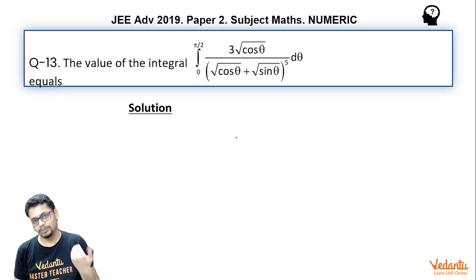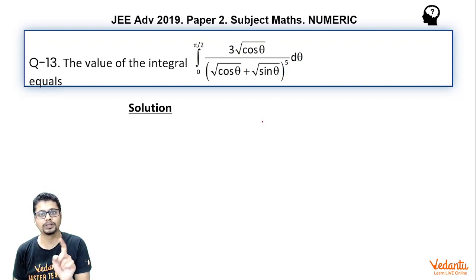So the better way would be to start with the integration as per indefinite integration and then put the limits. So, in such a case, we can divide numerator and denominator by cos to the power 5 by 2 theta, which essentially is root cos theta whole to the power 5.